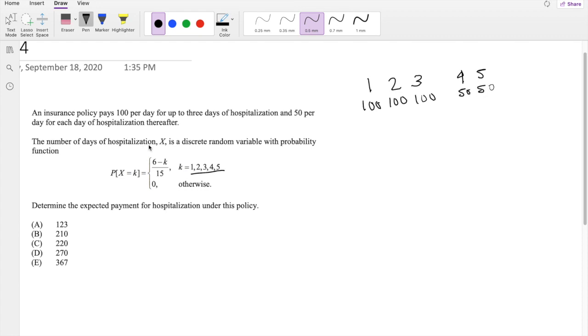The number of days of hospitalization, K, is a discrete random variable with probability function this. Determine the expected payment for hospitalization under this policy. Alright, so if this is the number of days, right?